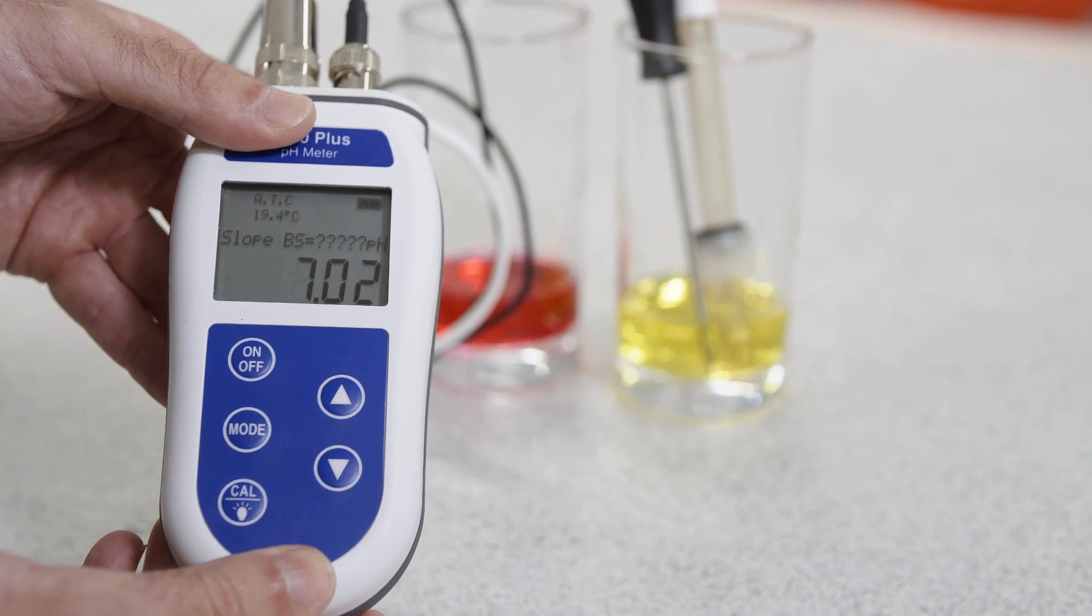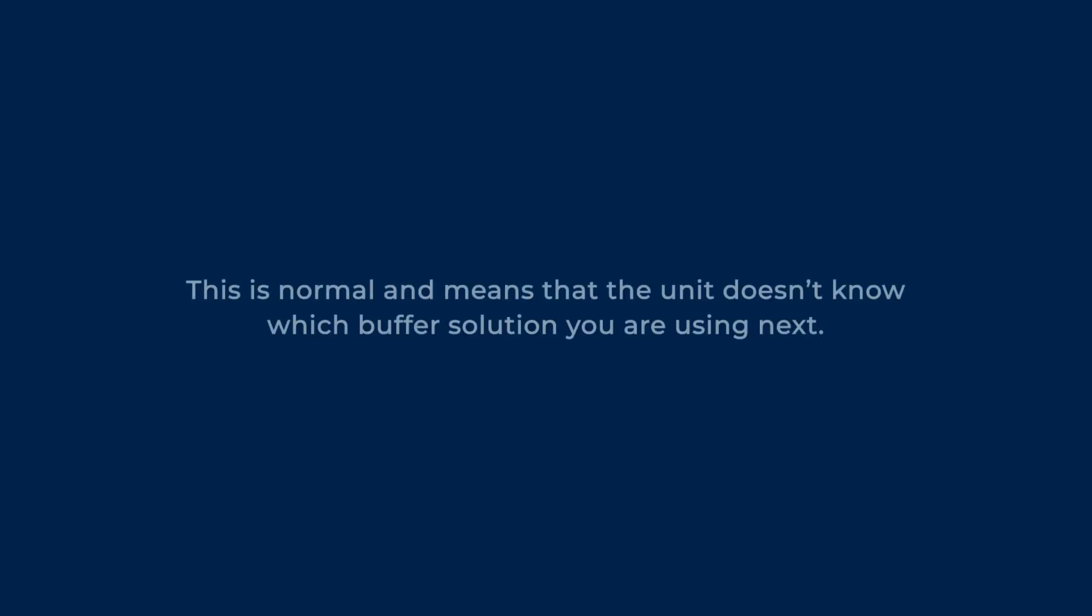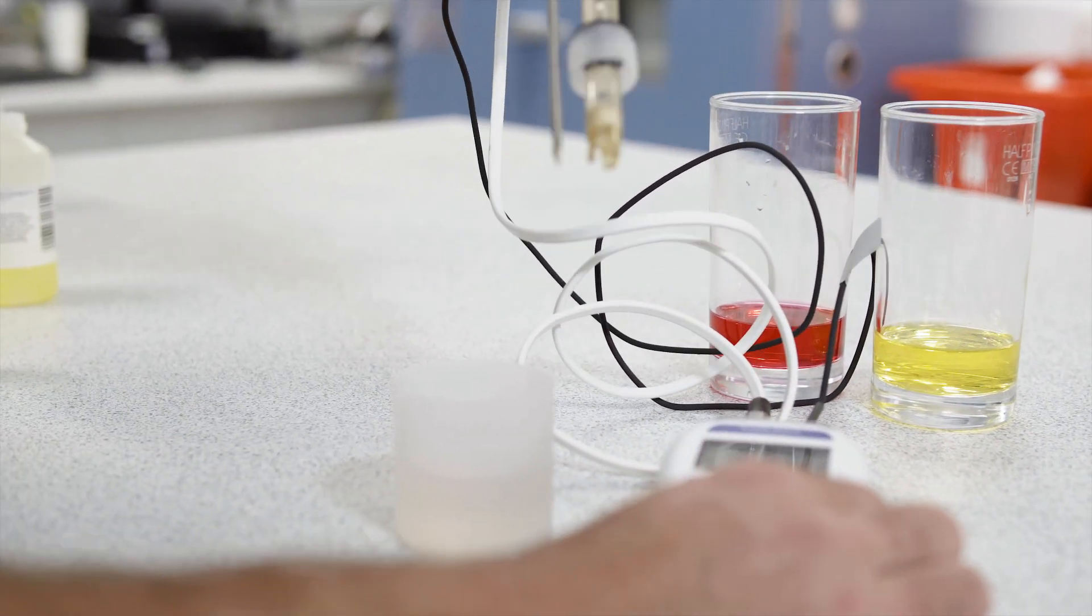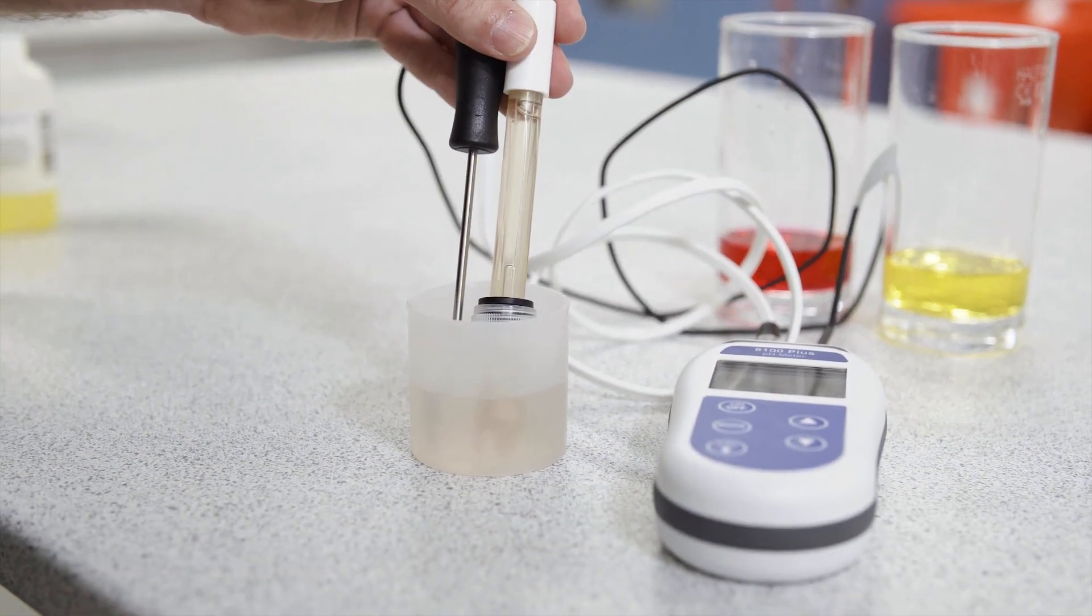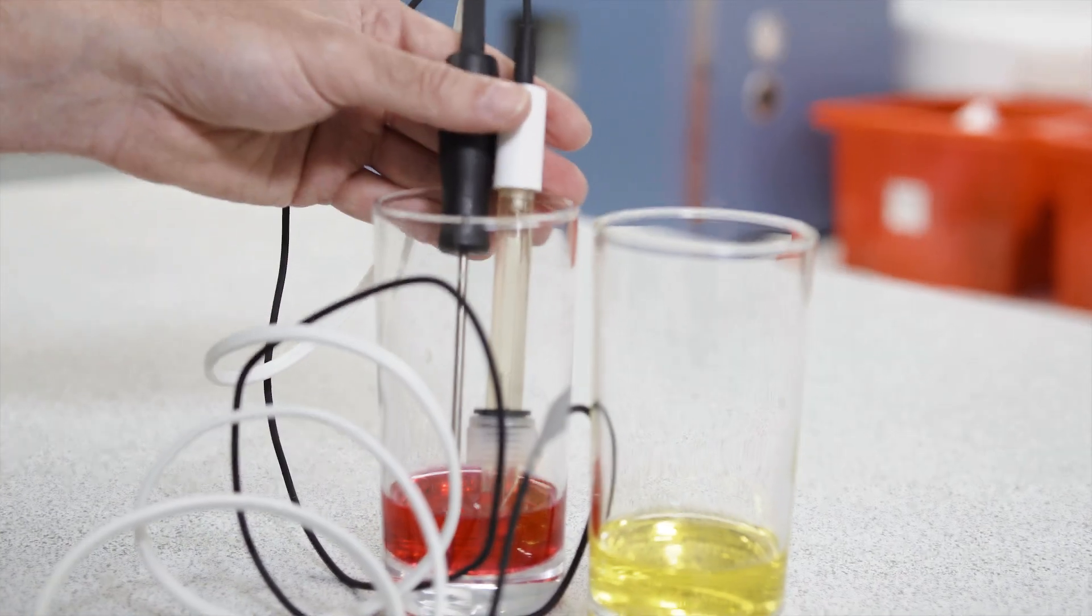The screen will change to show slope equals question mark. This is normal and means that the unit doesn't know which buffer solution you are using next. Remove both the probe and electrode from the pH 7 solution and rinse with distilled or deionized water. Place them into your second buffer solution.